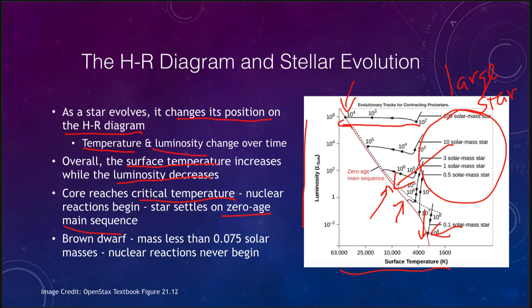If the mass is less than about 0.075 solar masses, it will never achieve high enough temperatures in its core for nuclear reactions to begin, and it becomes what we call a brown dwarf — a failed star that never became hot enough in its core for nuclear fusion.